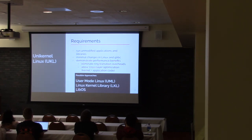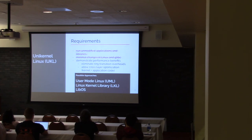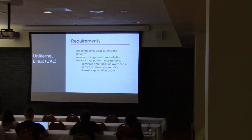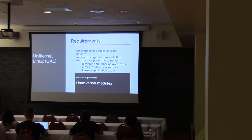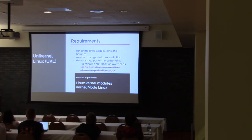There are different approaches which try to intermix kernel and application code. User mode Linux does not give you a single address space — there's still separation between kernel and applications, so you can't do those optimizations. Linux Kernel Library is a very stripped-down version of the kernel that runs in user space, and libOS is right now just the network stack as a library in user space. They don't run unmodified applications and libraries. Other approaches include implementing applications as Linux kernel modules — again, huge changes in applications — and Kernel Mode Linux, which allows applications to run in ring zero but still has that separation, so you can't do cross-layer optimizations.